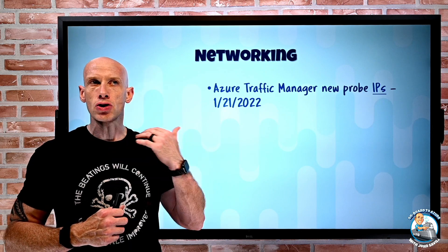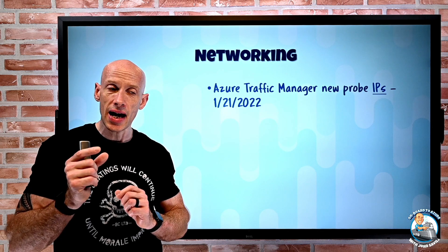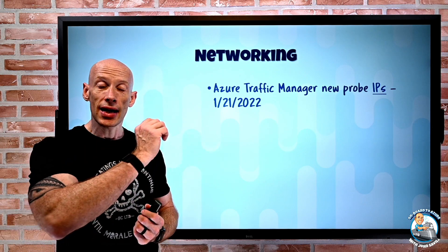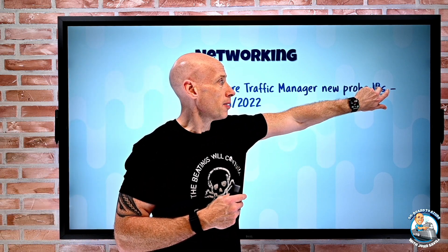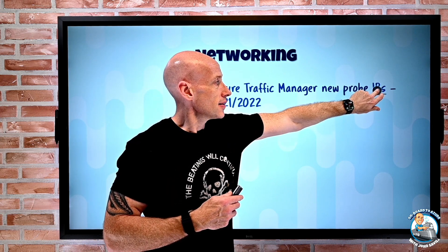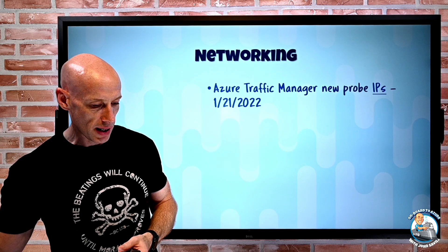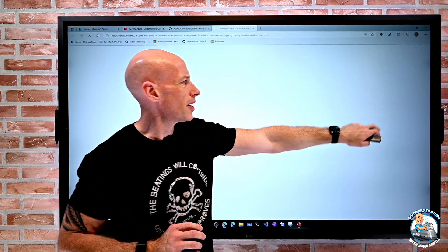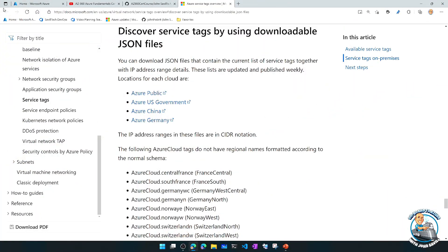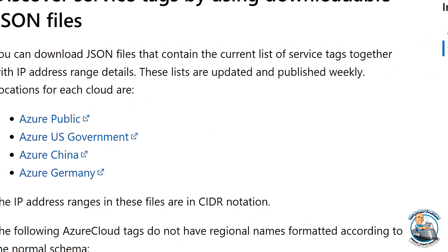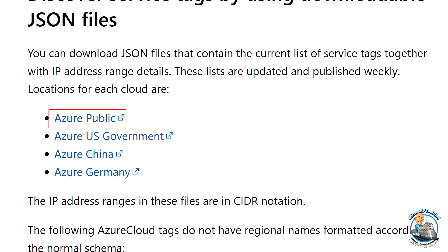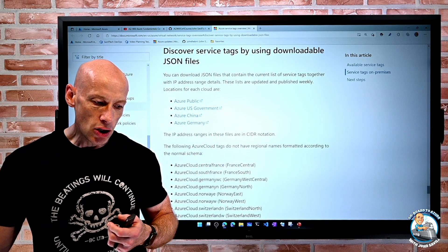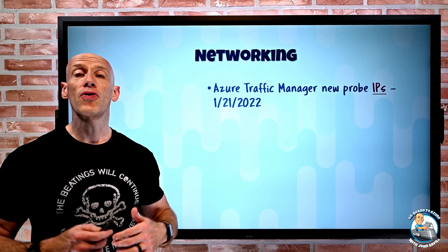If you're using Azure Firewall or network security groups and using the Azure Traffic Manager service tag, you don't need to do anything. Service tags are the IP addresses that make up that service. But if you're not doing that and limiting by specific IPs, make sure you head over. If you go and look at the service tags — it's doing some weird stuff today — but if you jump over to the document, it will let you download the JSON files. If you download the JSON file for Azure Public, it will give you all those IP addresses. So if you are doing it by IP address, make sure you head over and get those new IPs before the 21st of January.